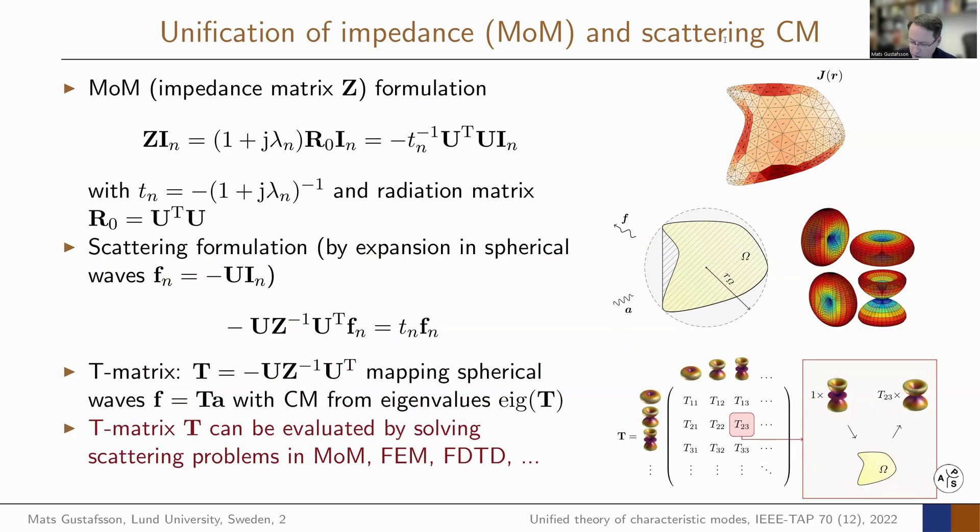You see one example here. You excite with some field, quadrupole or dipole, you take out another one. By doing that, you actually get one element inside this T-matrix. Then you can fill the matrix.